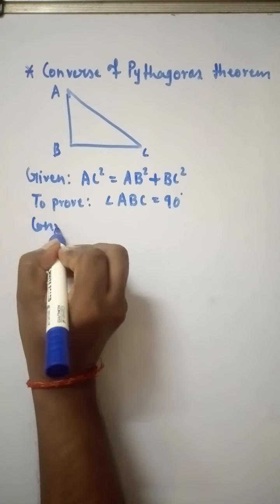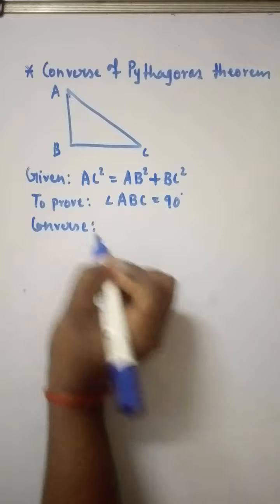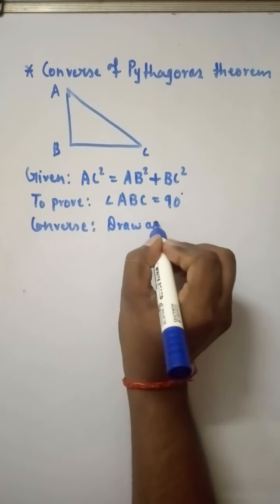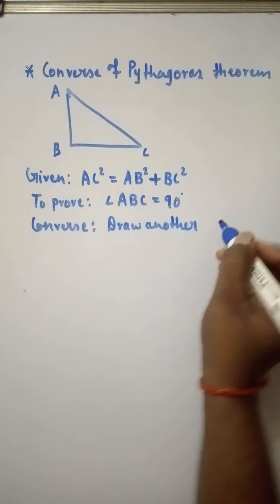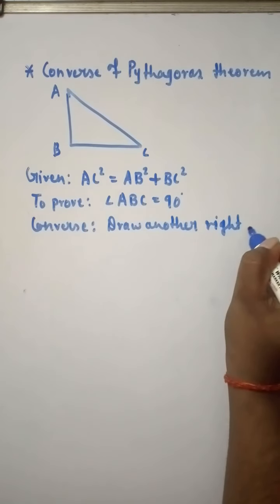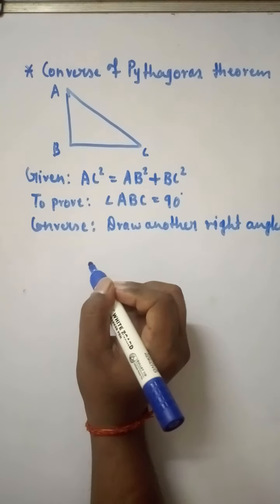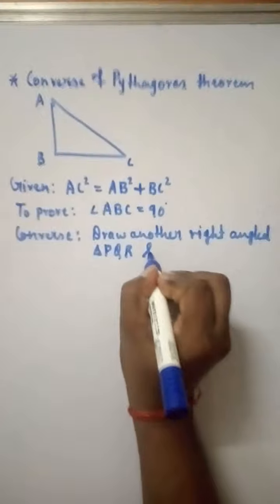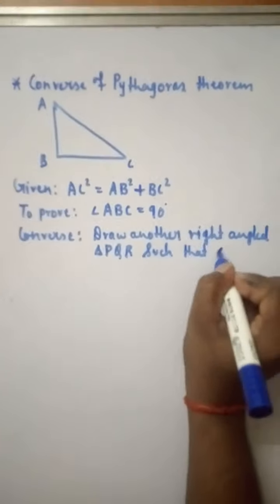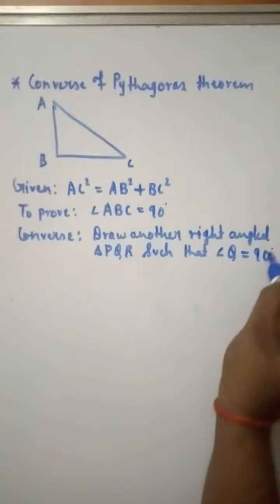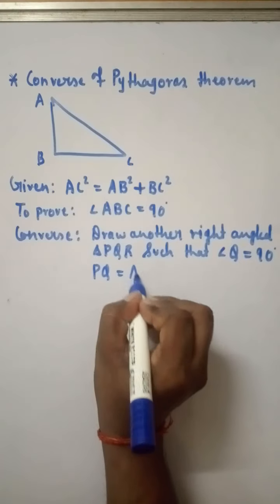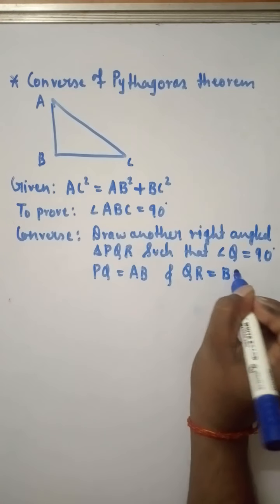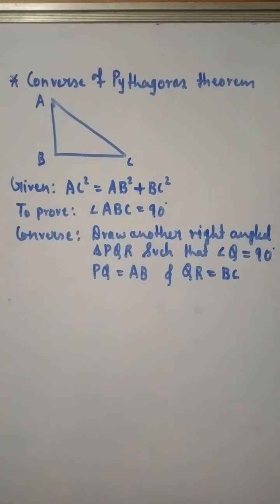Construction is required — as this is a converse proof, we can use the direct Pythagoras theorem. So in the construction, we draw another right-angled triangle PQR such that angle Q = 90°, PQ = AB, and QR = BC.